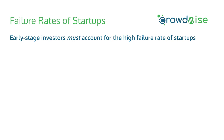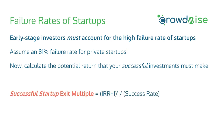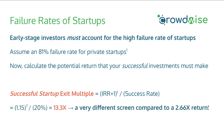Early stage investors must account for the high failure rates of startups. Assume an 81% failure rate for private startups — this can vary, but let's use that for this example. Now calculate the return that only your successful investments must make to hit your portfolio IRR target. You incorporate this by dividing the initial exit multiple by the success rate. With 81% failing, roughly 20% must be successful. Dividing our initial 2.66x by 20% gives a 13.3x return multiple — a very different type of business to screen for compared to 2.66x.